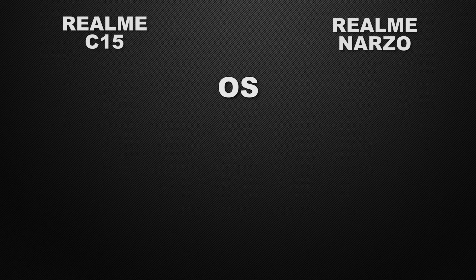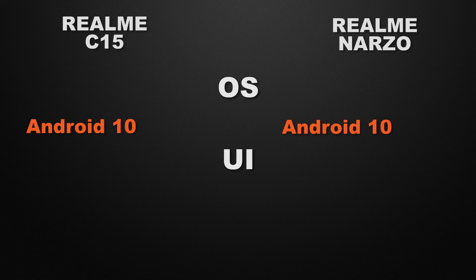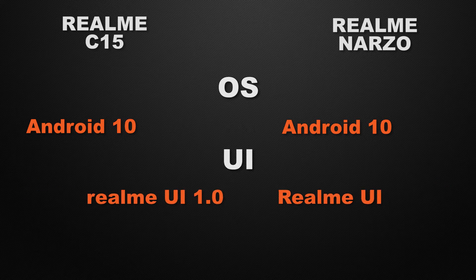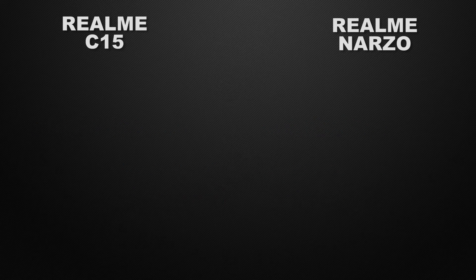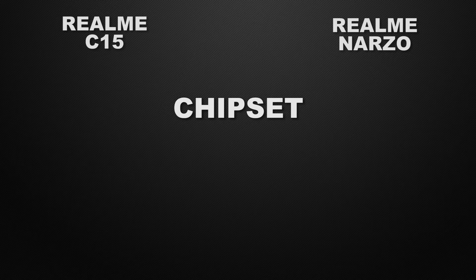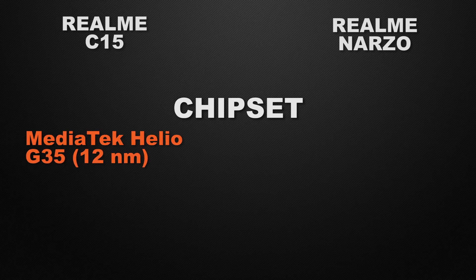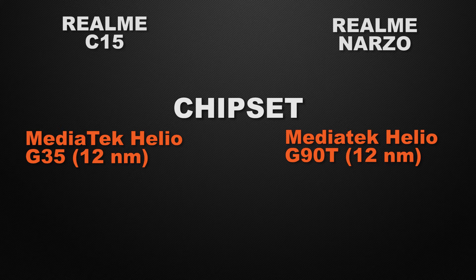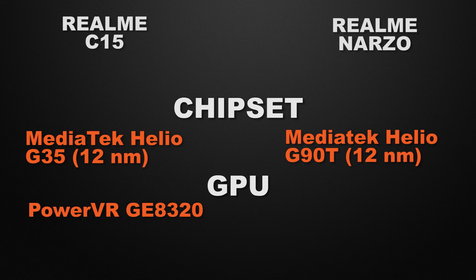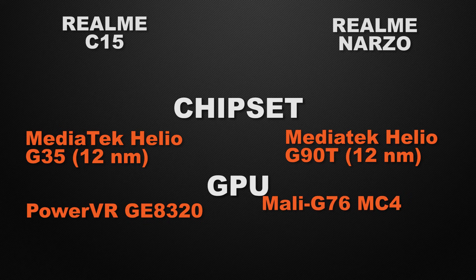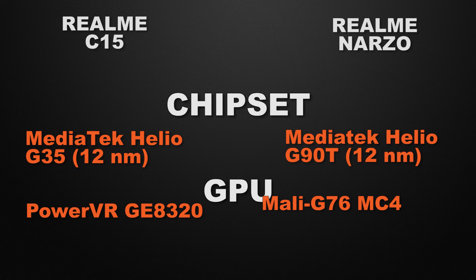Moving to performance: both devices run Android 10 with Realme UI, so it's a tie on OS and UI. For the processor, the C15 has a Helio G35 and the Narzo has a Helio G90T, which is better for gaming. The winner is Realme Narzo for faster processing speed. For GPU, the C15 has PowerVR and Narzo has Mali G76 — the winner is Realme Narzo for a better gaming experience.